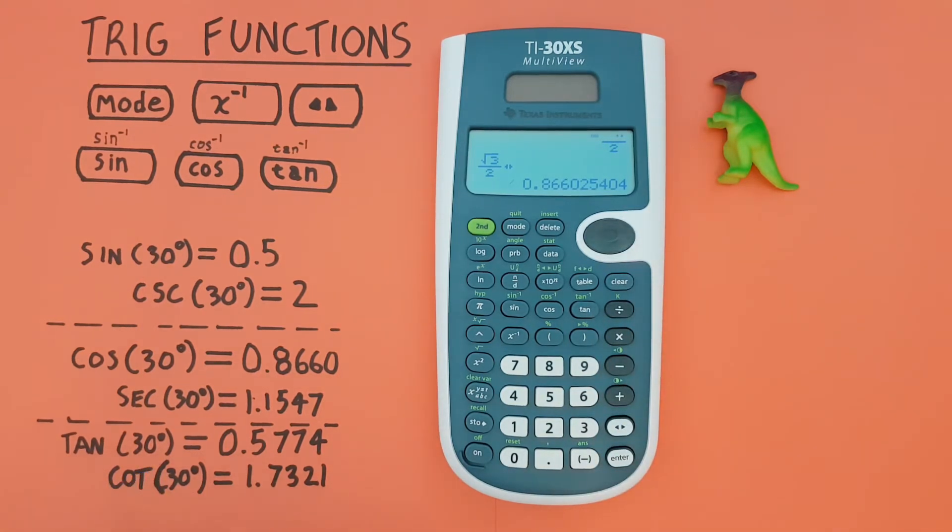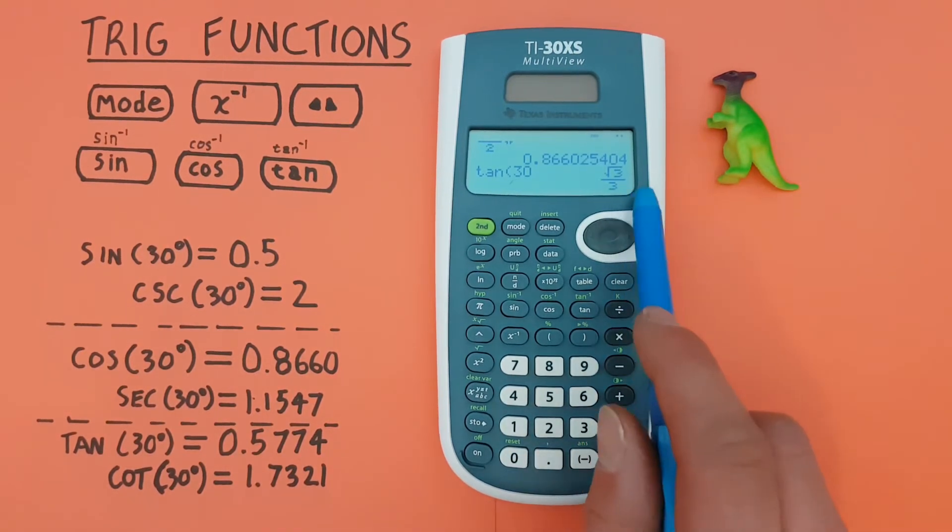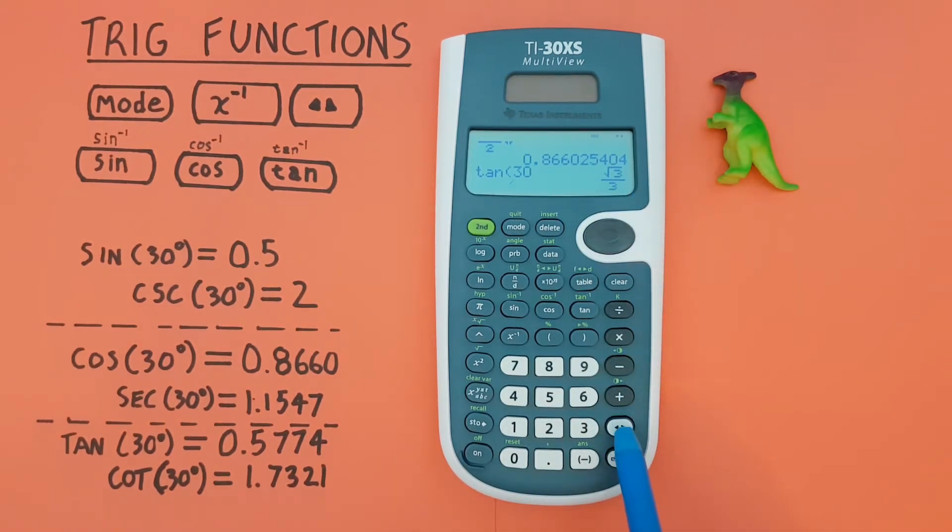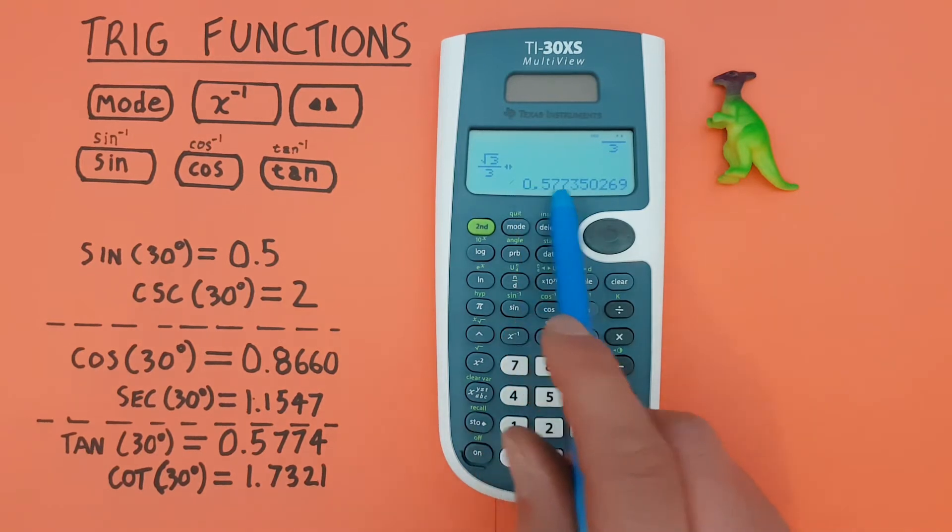And tan of 30, again, tan 30, enter. Again, gives us a fraction, and if we want this in a decimal rather than a fraction, we can convert. There we go.